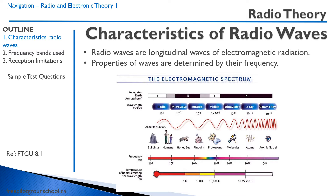After that we have ultraviolet, with wavelengths similar to the size of a molecule, then X-rays at the size of an atom, and gamma rays at approximately the wavelength of the atomic nucleus. Also at the bottom, if you heat something up to certain temperatures, it will emit wavelengths at different levels depending on the temperature — so the sun gives off white light because it's heated up to millions of degrees Kelvin.